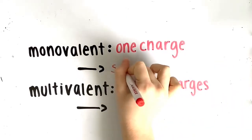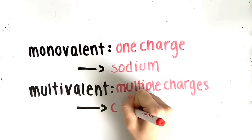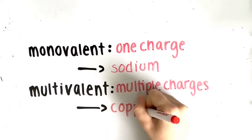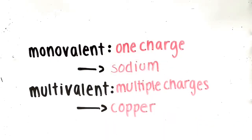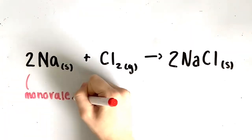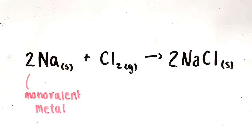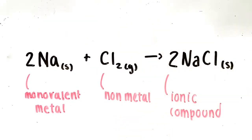For example, sodium is monovalent because it only has a charge of positive 1, while copper is multivalent because it can have a charge of either positive 1 or positive 2. An example of a monovalent metal reacting with a nonmetal to form an ionic compound is sodium plus chlorine yields sodium chloride.